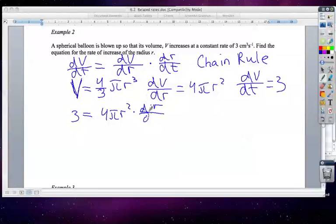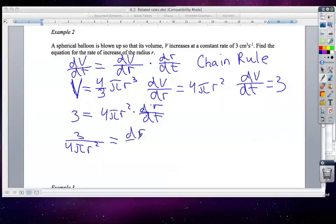And dr/dt is what we want to find, so we bring this over to the other side and get 3 over 4πr² equals dr/dt.